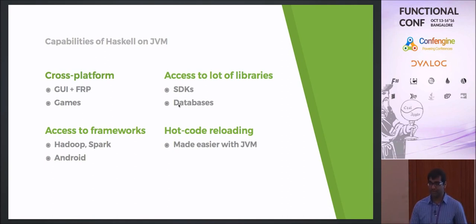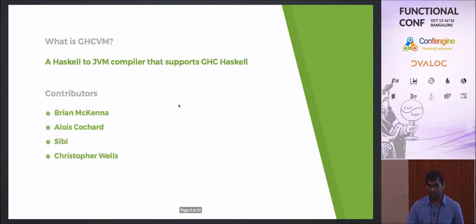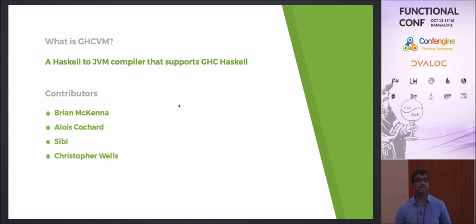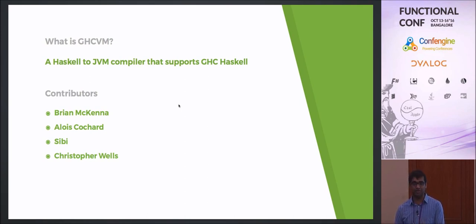The biggest point is you get access to the entire Java ecosystem using this within Haskell. So what is GHCVM? It's a Haskell-to-JVM compiler that supports GHC Haskell, specifically 7.10.3. That's the second-oldest version — we're currently at GHC 8, and the version just before that is GHC 7.10.3. This supports all those modern features like type families and everything.